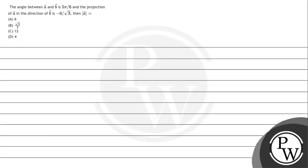Hello, let's read the question. The question says the angle between A and B is 5π/6, and projection of A in direction of B is minus 6 upon square root 3, then magnitude of A is equal to — options A, B, C, D are given.